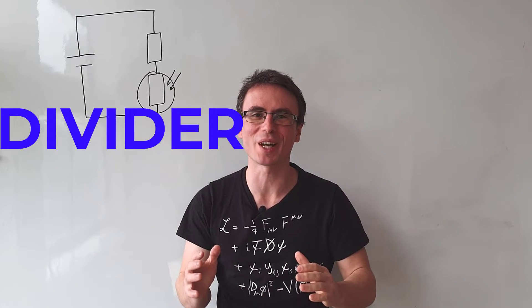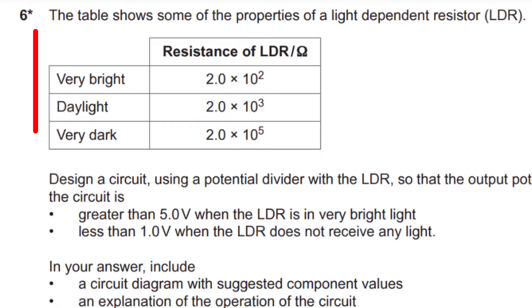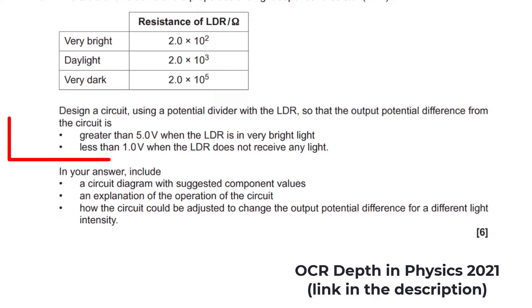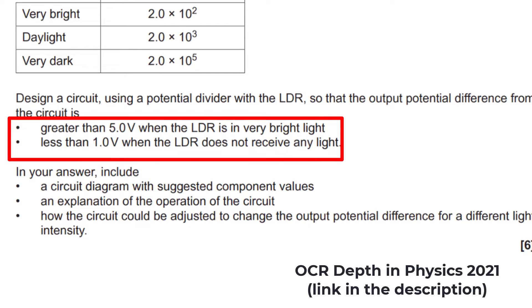Let's solve a tricky potential divider question. We have a table that shows some of the properties of a light dependent resistor. Design a circuit using a potential divider with the LDR so that the output satisfies the following requirements.